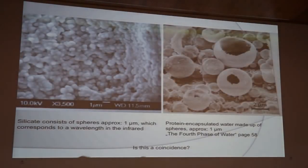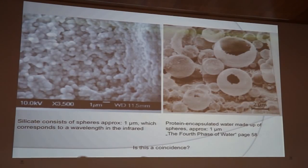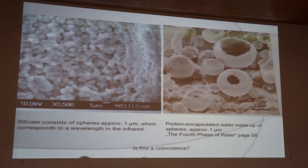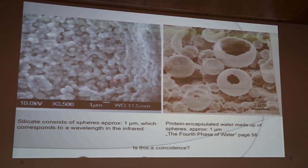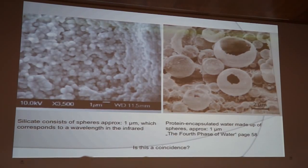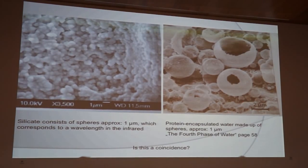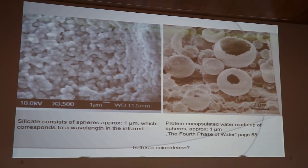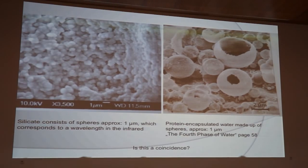Now, if this hypothesis is supposed to be at work in the cell this should be reflected in the measurement data. First of all a picture from the silicate showing that it is made up of small spheres which have a diameter of about one micrometer which corresponds to wavelength in the infrared. And I found this book in the fourth phase of water showing the protein encapsulated water made also of spheres of approximately one micrometer. Anyway, when you look at the small spheres here that's, yeah, is that a coincidence? I don't know. Maybe you can tell me.